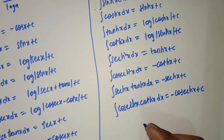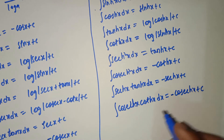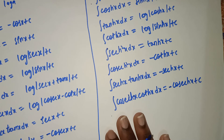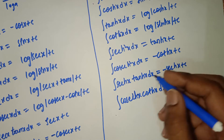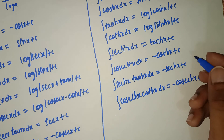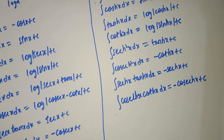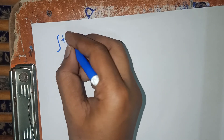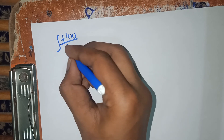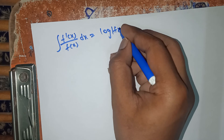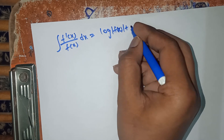Now we are going for general formulas in integration. Integral of f dash of x by f of x dx equals log mod f of x plus C. That means here — if you are differentiating d by dx of sin x, you get cos x. So if cos x is on top and sin x is on the bottom, the integral is log mod sin x. This is the basic one.